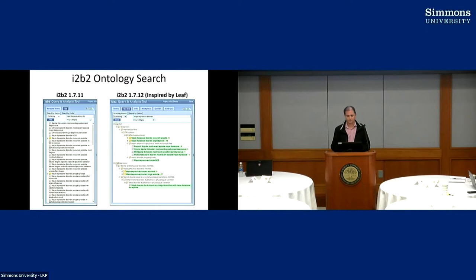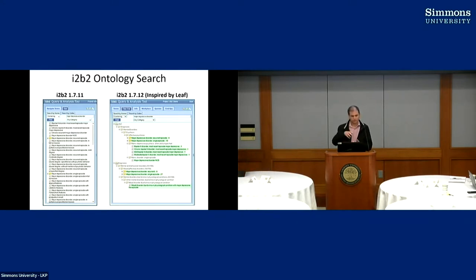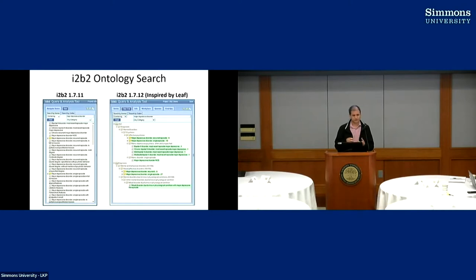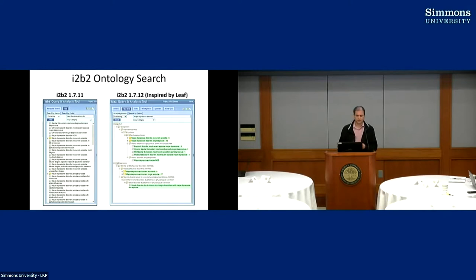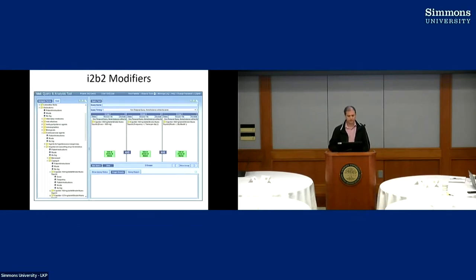For ontology, on the left is what search results used to look like in I2b2 when you ran a search term. On the right in version 1.7.12 it was more organized — it shows results within a hierarchy that looks like an ontology where searched terms fit, grouping them logically and showing parent paths for context. For example, 'major depressive disorder' appears in two different areas within the diagnoses hierarchy, making it easier for users to understand what they're getting.